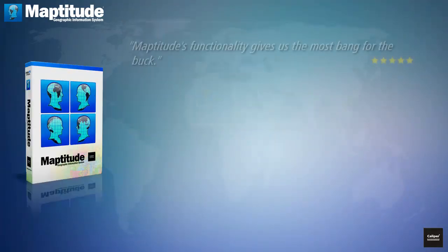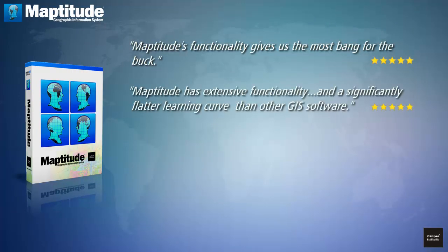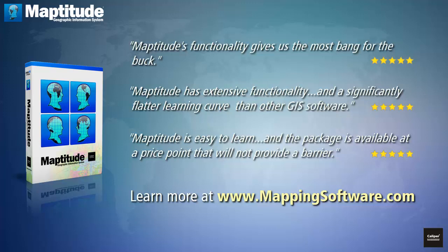With its powerful tools, secure offline data, customizable maps and point icons, unlimited pin mapping, free mapping data and up-to-date demographics, business locations, postal codes — and all with no subscription fees — it is easy to see why Maptitude users rave about its value and ease of use. Please visit MappingSoftware.com to learn more about or to order Maptitude.